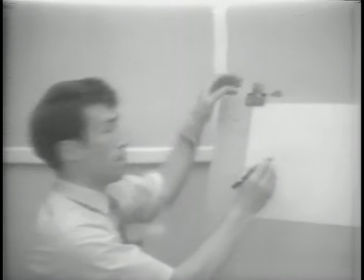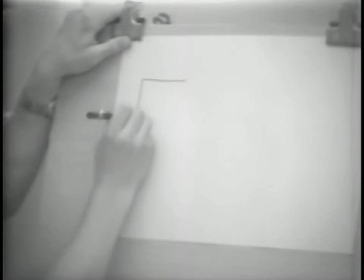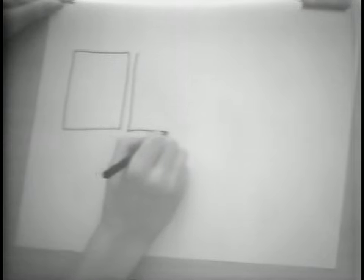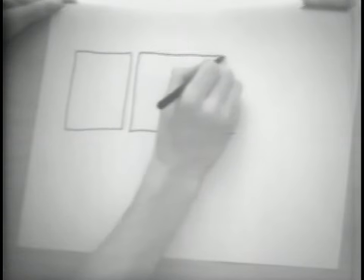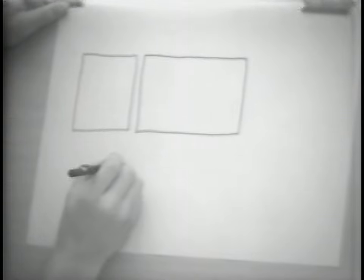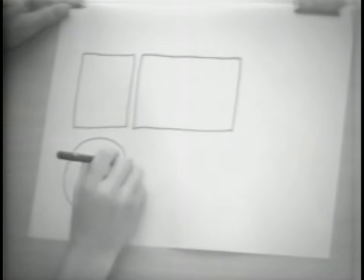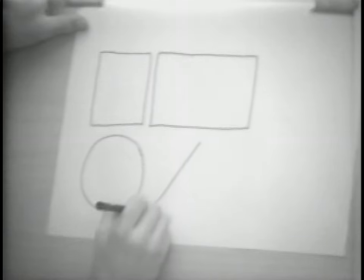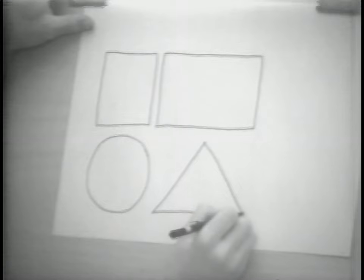Before we get started, I'd like to show you the kinds of shapes we'll be working with — simple shapes. The first is a square. You see them every day, all around you. Then there's a rectangle, which is like a square with four sides but a little bit longer. Then we have a circle and a triangle.